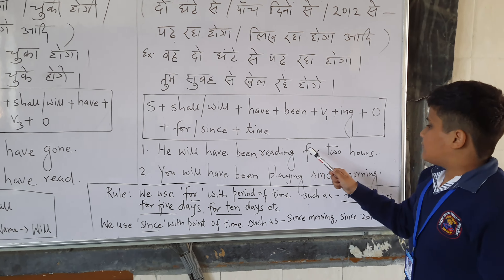Translation example: 'Woh do ghante se padh raha hoga?' — He will have been reading for two hours. You will have been playing since morning.